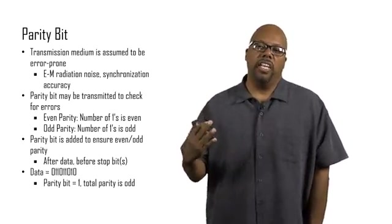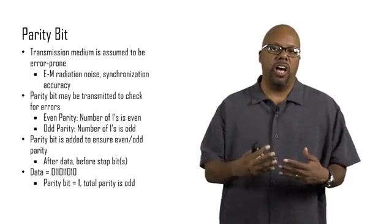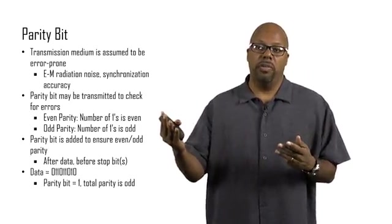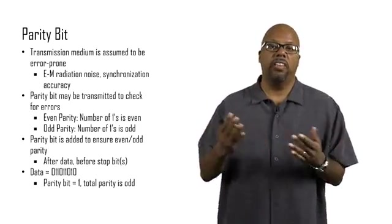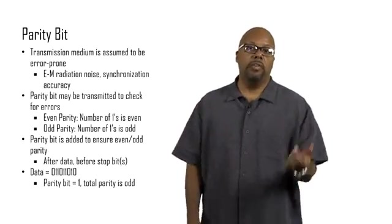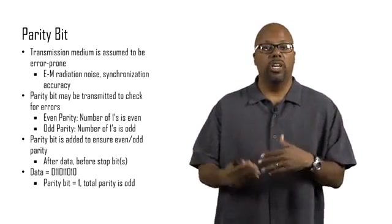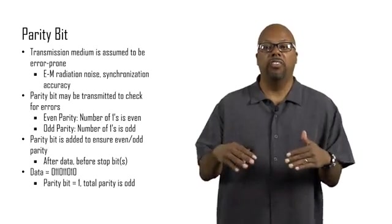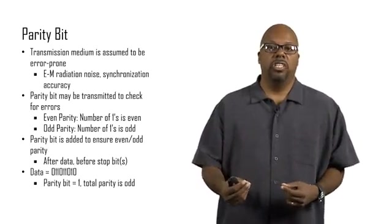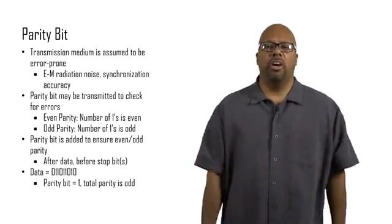Now at the receiving end, as it counted the number of ones that came in, it counted five ones, it realized that was odd, compared to the parity bit. And if the parity bit is also one, then it says this is okay. If one of these bits was flipped in transmission, then the parity would have changed. Say a zero was changed to a one, or a one changed to a zero. Either way, the parity would have become even, and it would have noticed a mismatch. If a single bit is changed, then this can be detected using a parity bit.